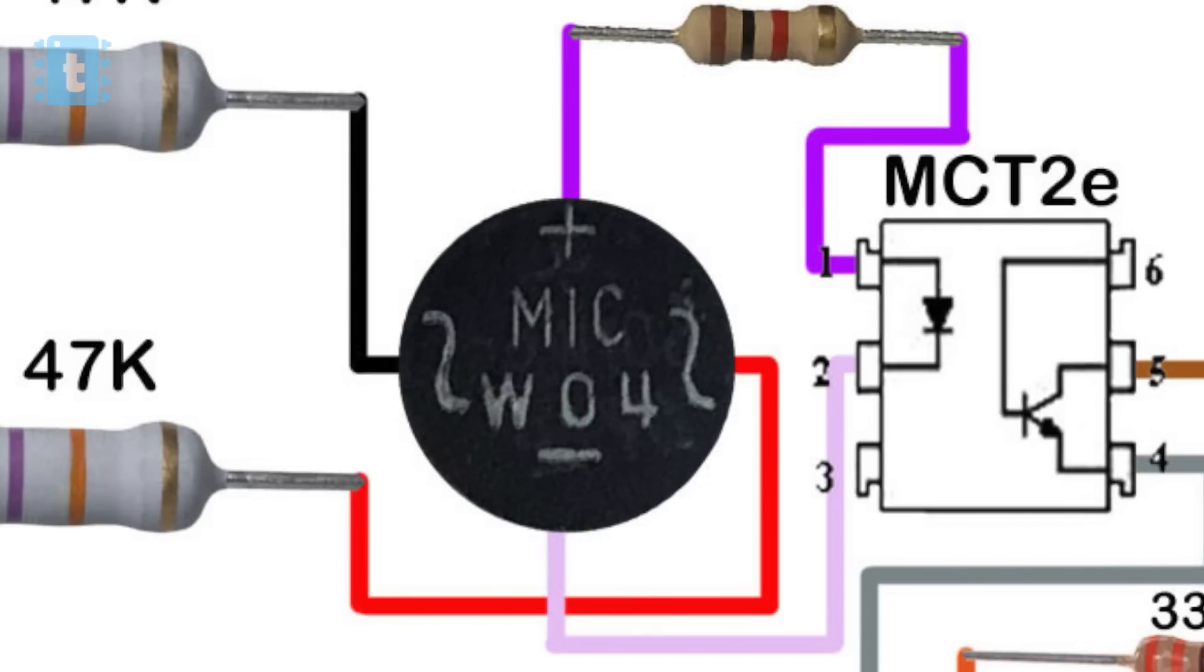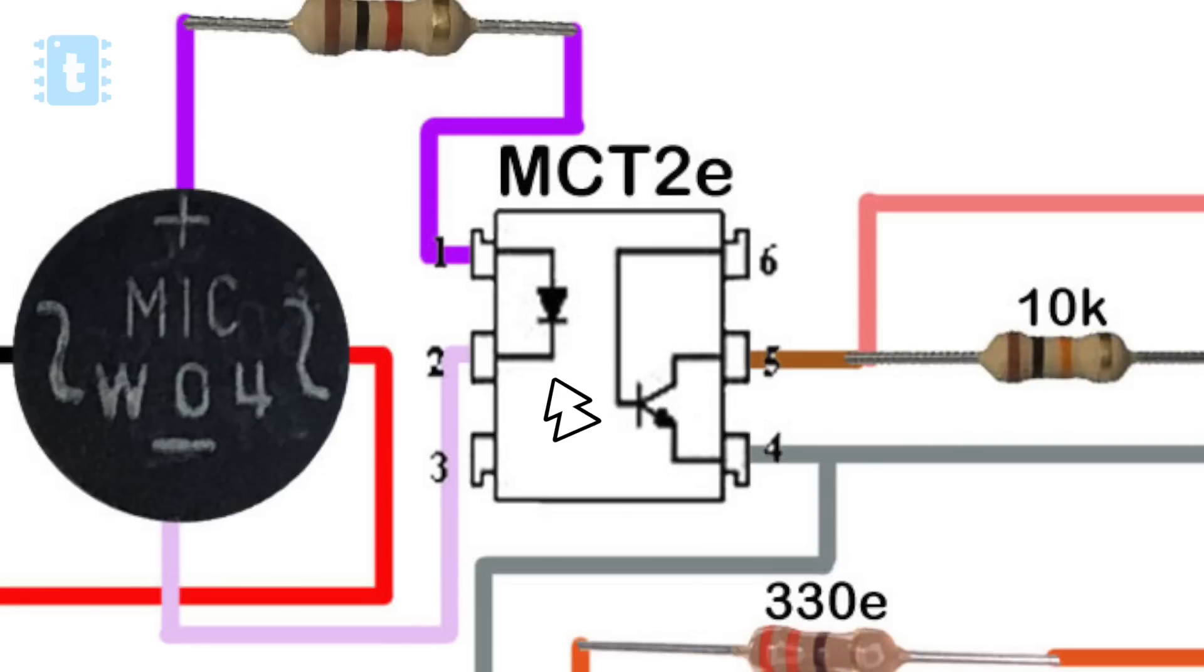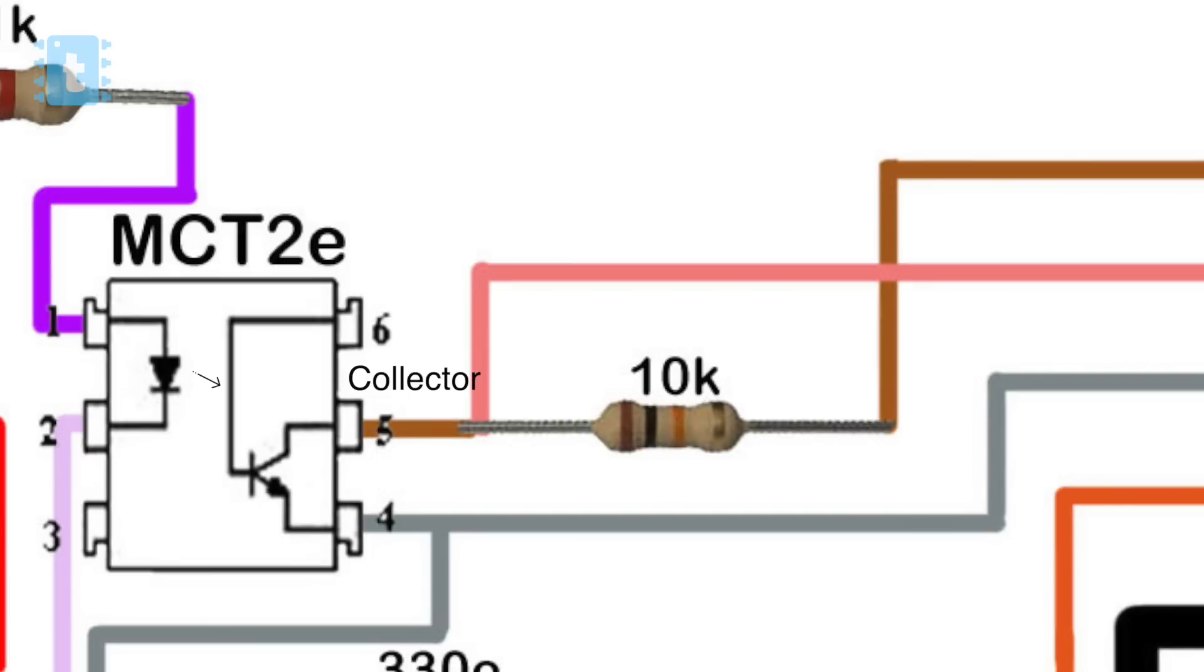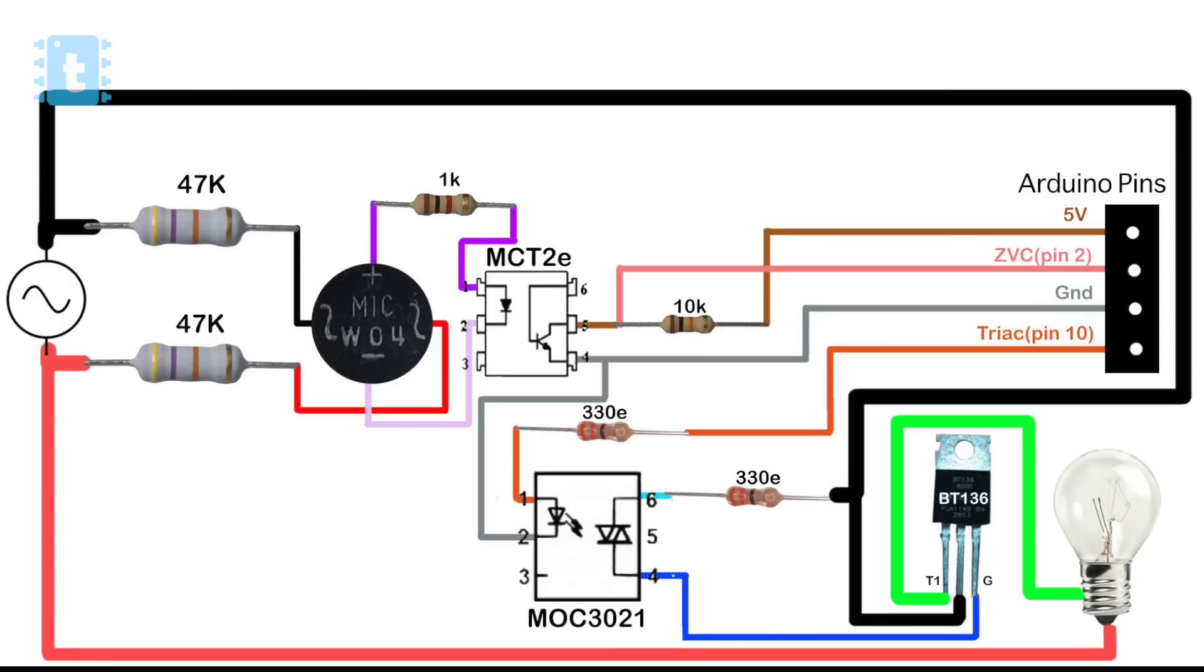These ICs have an LED at the input and transistor at the output. So whenever the LED glows, the current flows from the collector to emitter of this internal transistor. In this connection, whenever input AC signal reaches to zero volt, the internal LED will be off and the signal to the Arduino will be given as digital one due to this pull-up resistor.